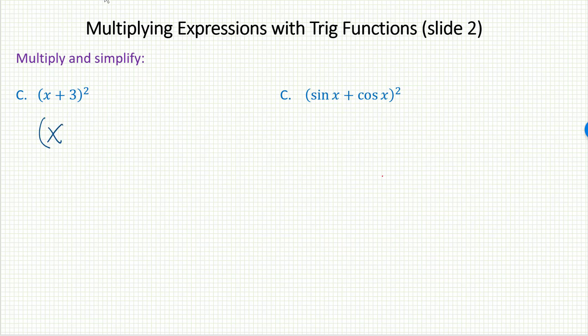Squaring means multiplying this by itself. And so you quickly realize, oh, this is just another foil situation. And that's how you have to work this out.